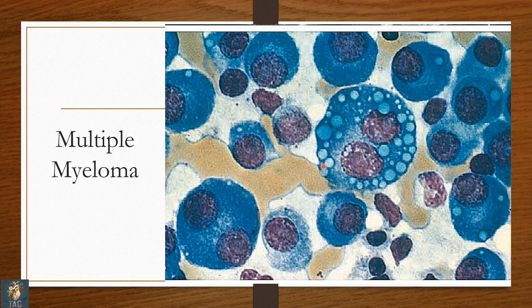This is an atypical form of plasma cell. You can appreciate granules or droplets in the cytoplasm — these are actually immunoglobulins, as plasma cells form immunoglobulins. Here is another atypical form of plasma cell, and the slide is full of plasma cell population. The diagnosis is multiple myeloma.